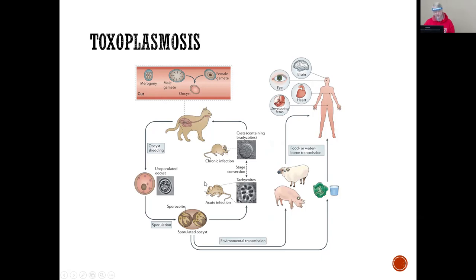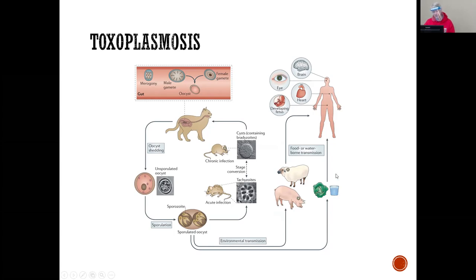So Toxoplasma gondii has a way of surviving — not only in a cat but in a mouse — and it keeps going over and over. Those sporulated oocysts can also be spread if the feces is in the grass or feed wherever cats or mice are. Then other animals get infected with Toxoplasma gondii, and we can ingest it through feces-contaminated food or water.